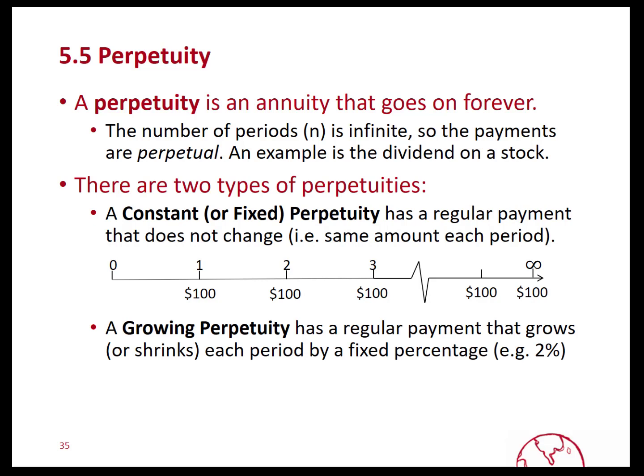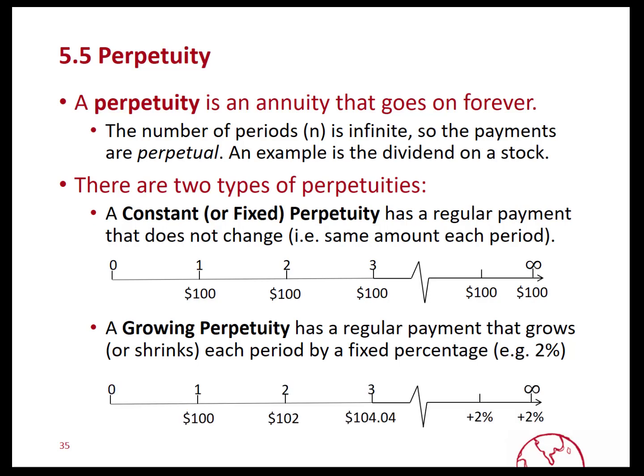The second type of perpetuity is a growing perpetuity, where there is a regular payment but it grows or shrinks each period by some fixed percentage. For example, a company could have a dividend that grows by 2% each year. You may receive $100 at the end of the first year, but at the end of the second year it will have grown by 2% to $102. At the end of the third year it will be $104.04 because of compounding, and it goes on in perpetuity growing at 2% each period.